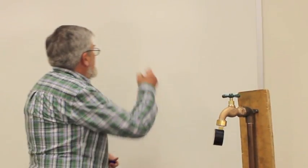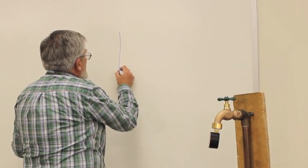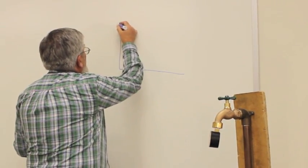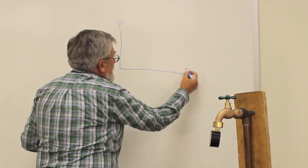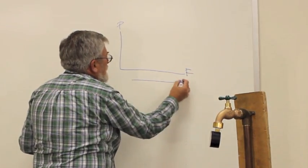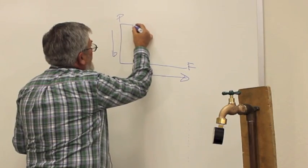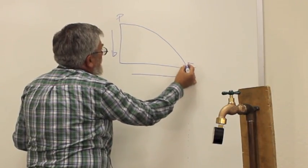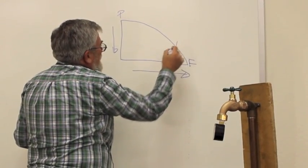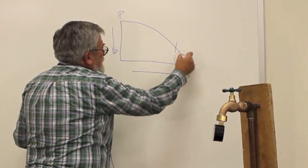So if we were to chart that, we would have pressure up here and we'd have flow up here. So as our flow increases, our pressure decreases. So if we were to design a system, we would want to find out how much flow we can use before the pressure gets too small.